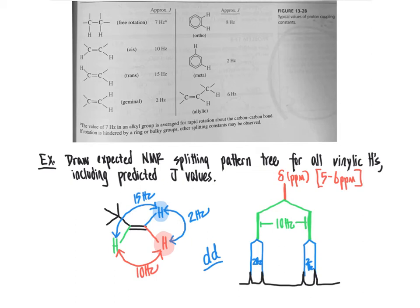This is useful because when two protons are coupled to one another they show the same coupling constant to each other. If the blue proton sees a coupling constant of 2 Hertz with the red proton, the red proton must also see 2 Hertz with the blue proton — the relationship is reciprocal. This helps identify which protons are geminal or vicinal to other protons in the molecule.